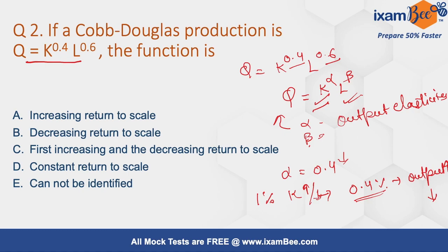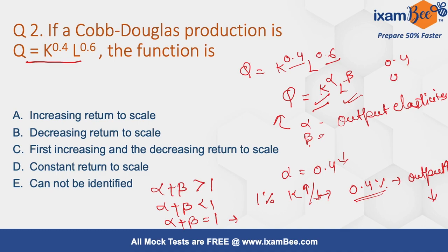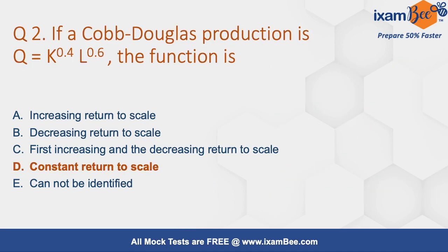To find the nature of returns for a Cobb-Douglas production function: if alpha plus beta is greater than 1, it is increasing returns to scale; if less than 1, decreasing returns to scale; if equal to 1, constant returns to scale. Here alpha is 0.4 and beta is 0.6, which sums to 1. Therefore the answer is C: constant returns to scale. This type of one-mark question is very basic.